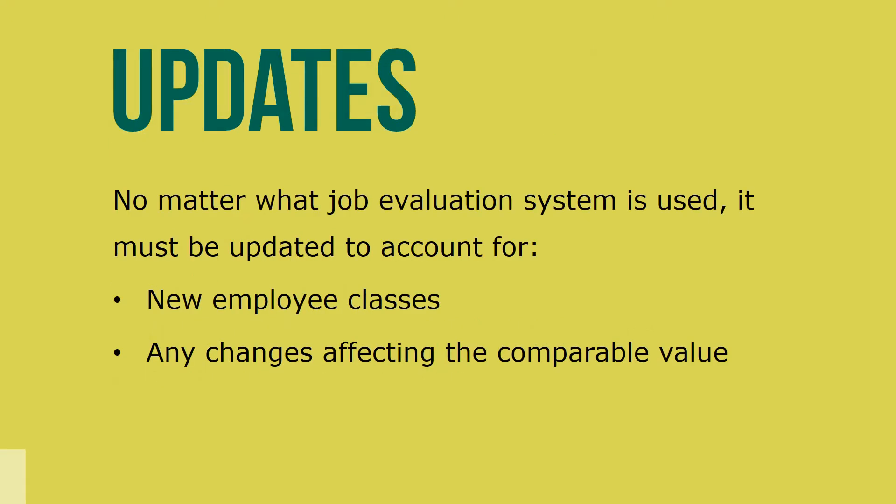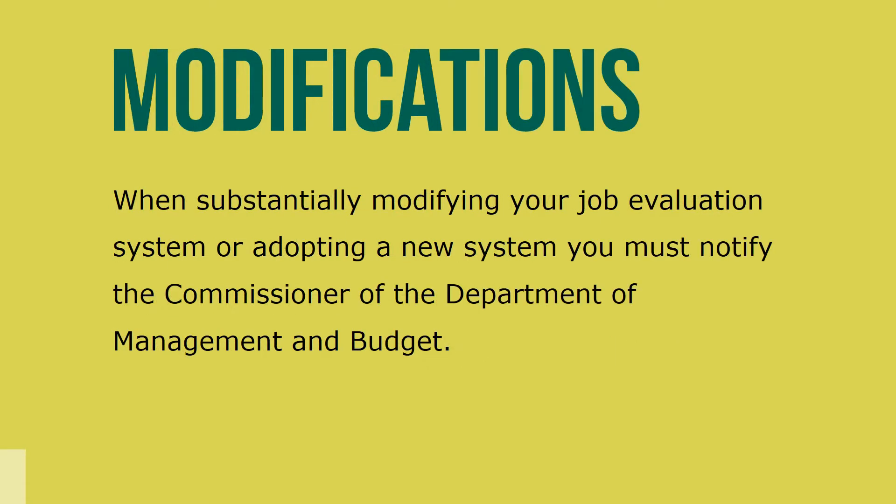No matter what job evaluation system is used, it must be updated to account for two things: new employee classes, and any changes in factors affecting the comparable work value of existing classes. When substantially modifying your job evaluation system or adopting a new system, you must notify the commissioner of the Department of Management and Budget. Agencies should note that the results of any job evaluation system and subsequent reports may be used in any proceeding or action alleging discrimination.